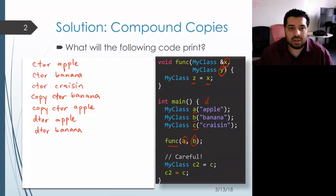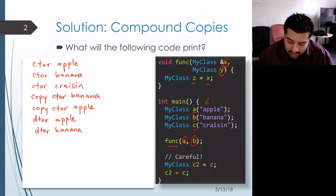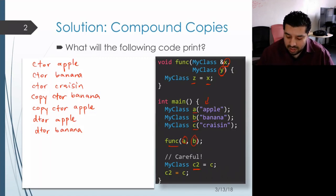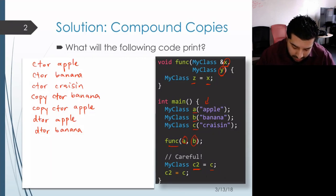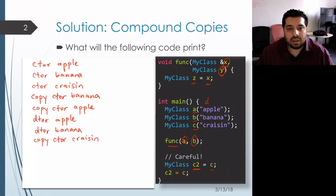The function is complete, it returns, and we continue where we left off in main. The next thing it does is construct the object c2 as a copy of c. Again, because we're initializing a new object, that means we get a call to the copy constructor, and the string saved inside of c is 'crazen'.